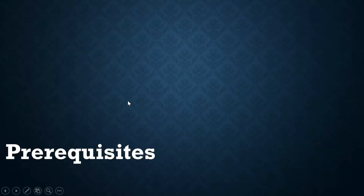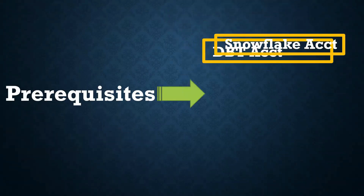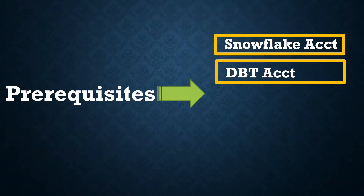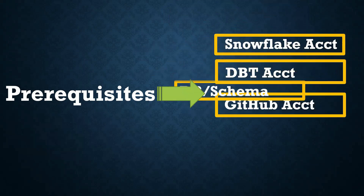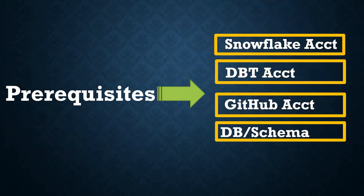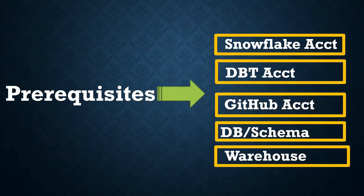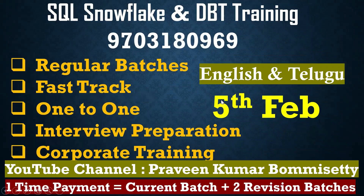For this, the prerequisites are: you should have one Snowflake account, a dbt (data build tool) account, a GitHub account, and you should have knowledge on how to create a database, schema, and warehouse. So these are the prerequisites. Let's discuss how to integrate dbt with GitHub.